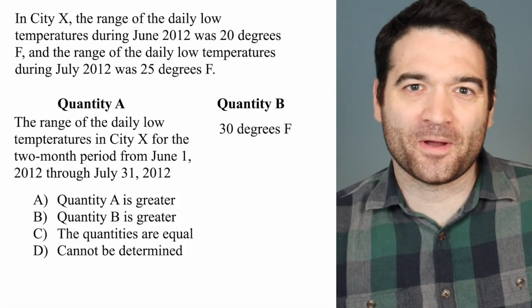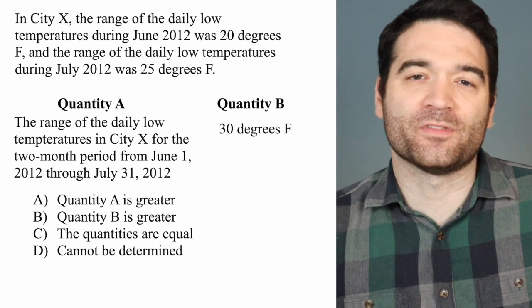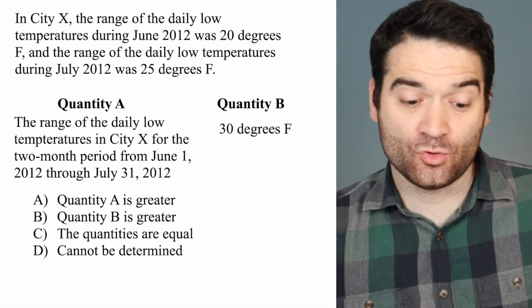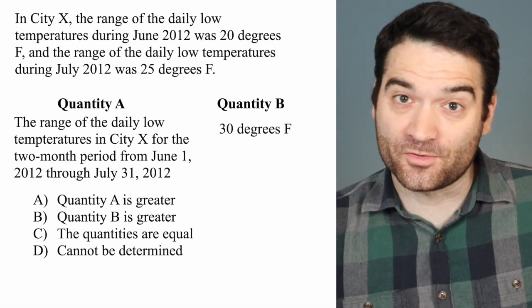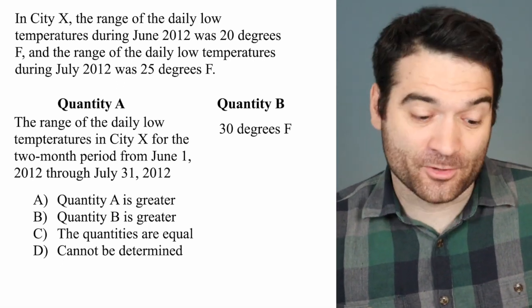Here's a GRE quantitative comparison question. Let's take a look. In City X, the range of the daily low temperatures during June 2012 was 20 degrees Fahrenheit, and the range of the daily low temperatures during July 2012 was 25 degrees Fahrenheit.